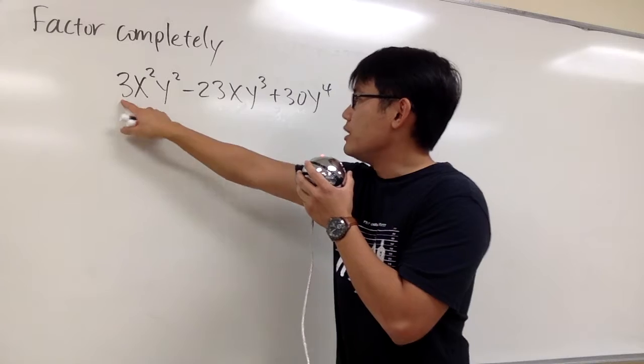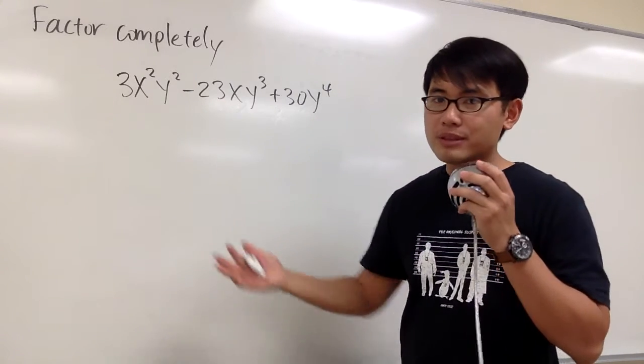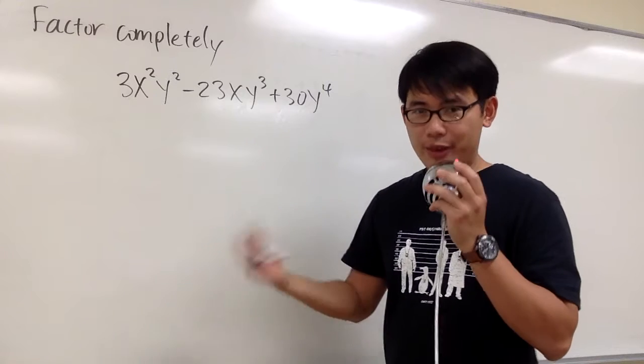Let's look for the numbers. We have 3, 23, and 30. Can we think about any common numbers that goes into these numbers? No, right?